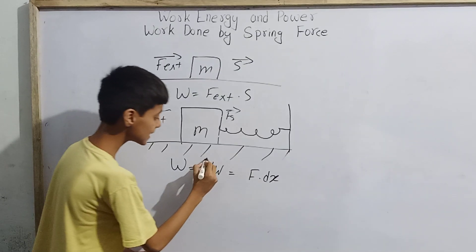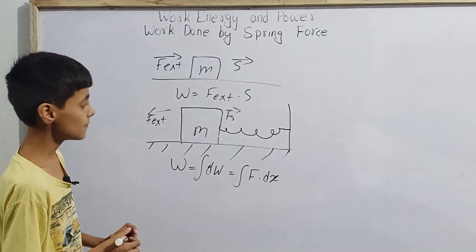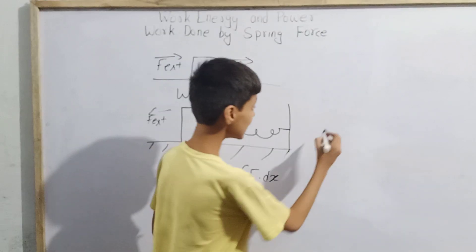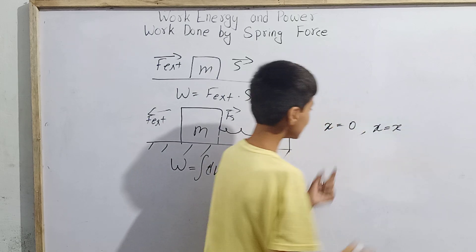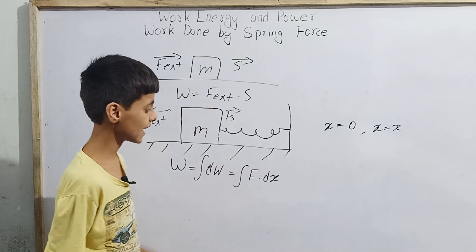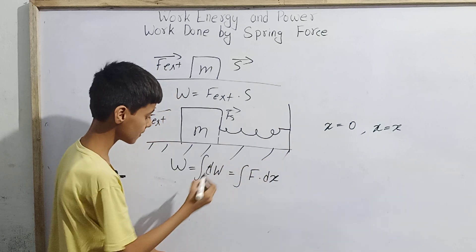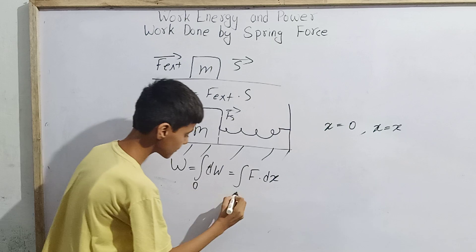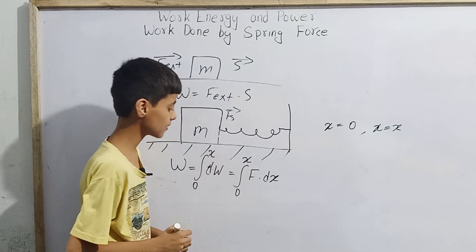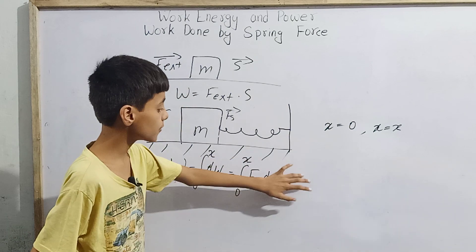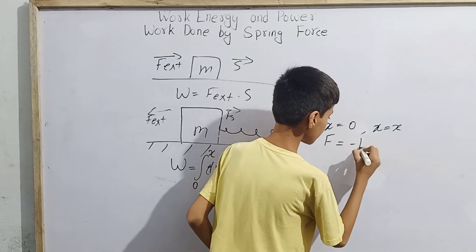We need to integrate both sides. For the limits: imagine the displacement x goes from value 0 to x. So we write the integral from 0 to x of dW equals the integral from 0 to x of F · dx.